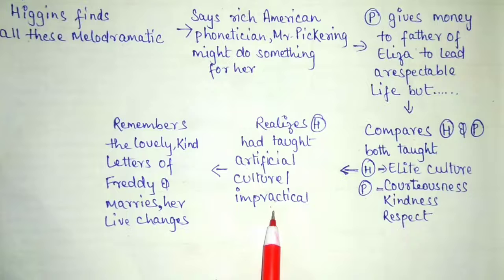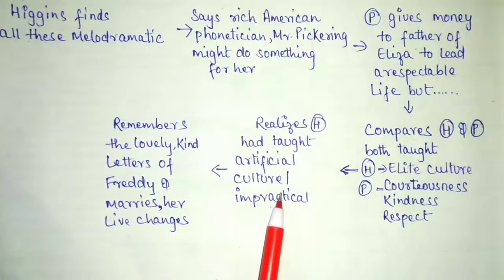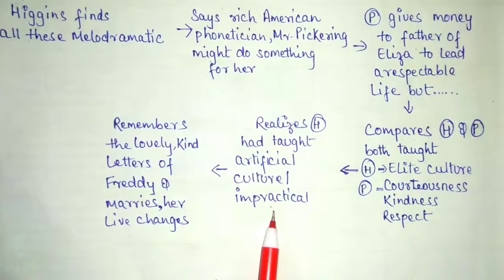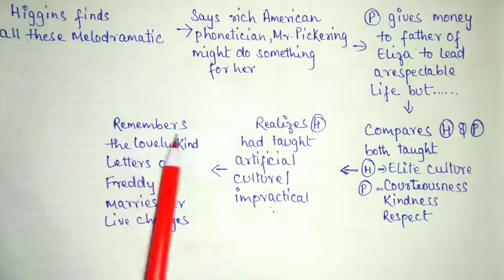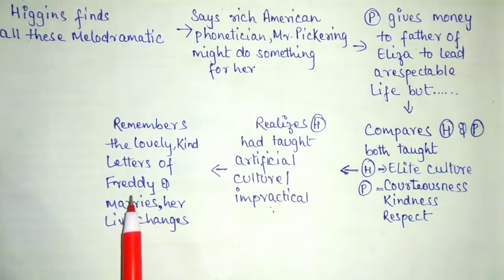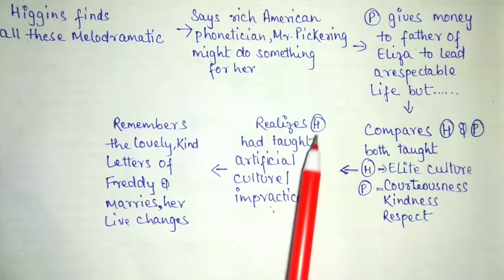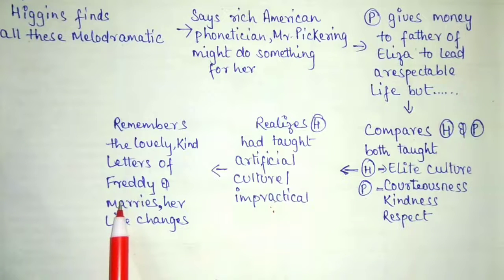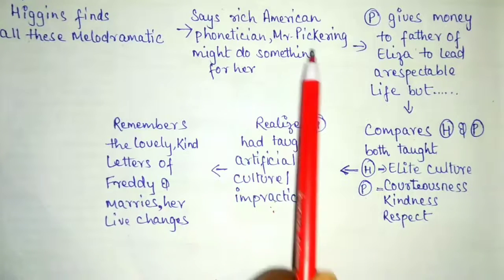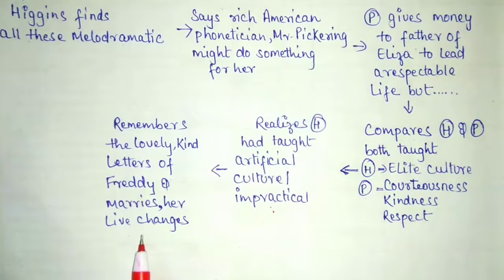She becomes so helpless, irritated, and frustrated, and at last finds that she was used merely for completion of an experiment, which makes her even more frantic. She thinks that she was in search of kindness, and it was received from Freddie, who used to write lovely and kind letters to her while she was under Higgins' training. She finally finds true love.